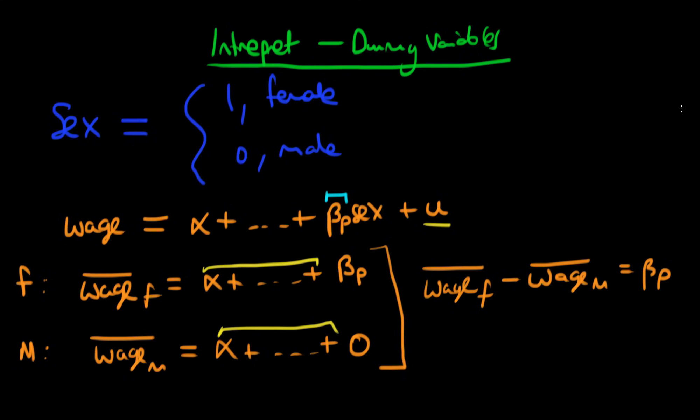So in this context, β_p actually represents the wage premium which females would command over males. And normally in econometrics, we think about this wage premium as actually probably being negative, or in other words, we expect males to command some wage premium over females. That's an empirical fact that's been proved in a number of studies. There is still some gender bias in the workforce.